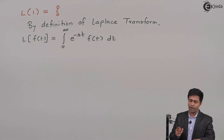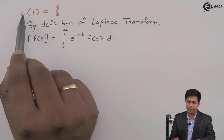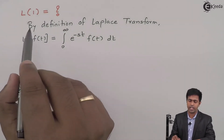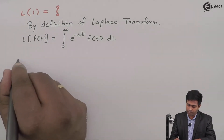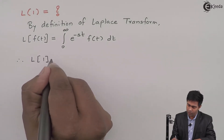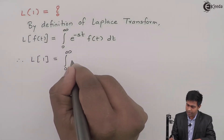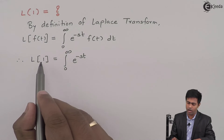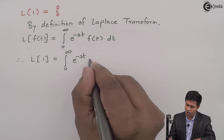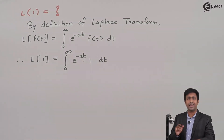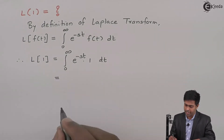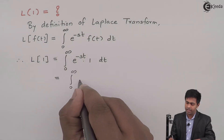Let's use this definition to find out the Laplace transform of 1. If I compare Laplace of 1 with Laplace of f(t), then we can say that f(t) is equal to 1. Therefore, Laplace of 1 equals integration from 0 to infinity of e raised to minus st, and since f(t) is 1, we write it as e raised to minus st into 1, which is simply e raised to minus st dt.